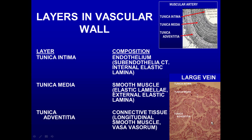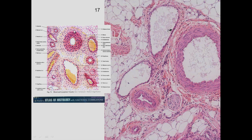In veins you can have longitudinal muscle, especially in long hanging veins. In the atlas we see an artery and a vein, with smaller arteries and venules nearby, and a lymphatic vessel. Here we see artery smooth muscle with different layers, a smaller artery, maybe an arteriole, and venules with a big space relative to wall thickness.